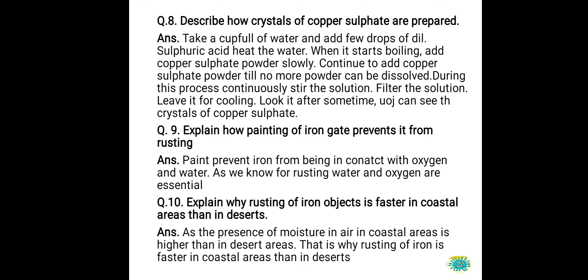Question number 10: explain why rusting of iron objects is faster in coastal areas than in deserts. In coastal areas, the air contains more moisture and the objects are exposed to both water and oxygen, which speeds up rusting. In deserts, the air is dry with no moisture content, so rusting is much less.